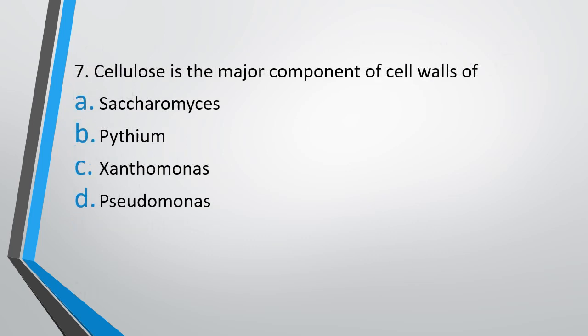Question number 7: Cellulose is the major component of cell walls of — Saccharomyces, Pythium, Xanthomonas, or Pseudomonas. Major component of cell wall is cellulose in which of the following organisms? The correct answer is option B, Pythium.